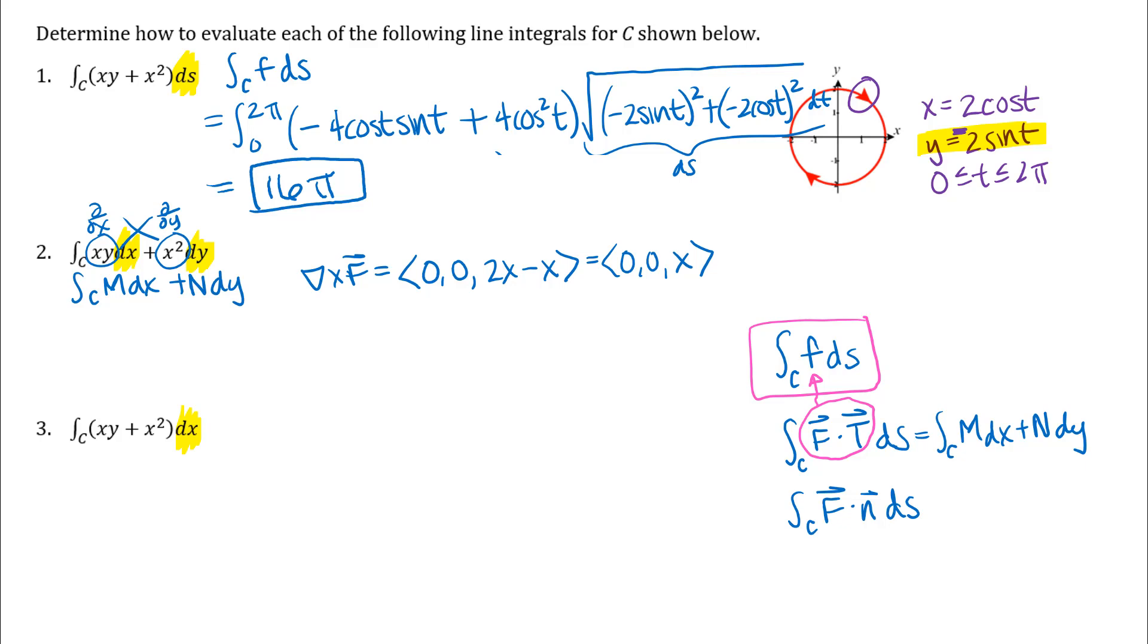But I do have a fairly simple k component of curl so I can think about using Green's theorem here. There is one little thing to be careful about. Green's theorem does indicate that I need a counterclockwise orientation on my curve in order to have this equality and I don't have a counterclockwise orientation here. I have a clockwise orientation here. So I've mentioned in some previous videos but I haven't done any problems yet like that where you can actually use Green's theorem if the orientation is backwards.